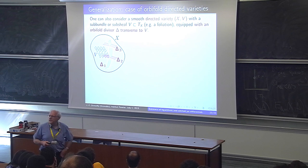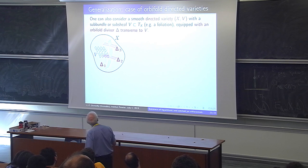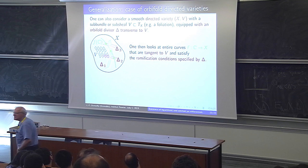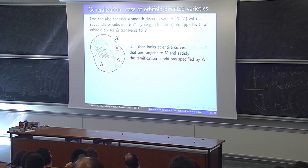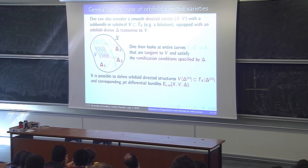One can also consider orbifold directed structures: curves tangent to a distribution or foliation that hit components with certain multiplicities, giving orbifold directed structures. You can again apply the Morse inequalities and obtain precise integral conditions for the existence of sections.